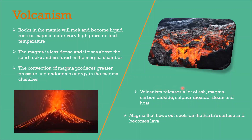Volcanism releases a lot of ash, magma, carbon dioxide, sulfur dioxide, steam, and heat into the Earth's atmosphere. Magma that flows up and cools on the Earth's surface becomes lava. When we see a volcano erupt, it will spill a lot of ash and lava that comes running down the volcano.